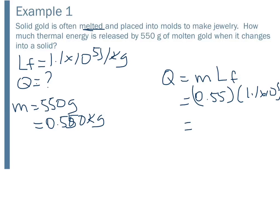So when you do that you get 60,500 joules. We'll divide that by 1,000 so we get 60.5 kilojoules. And we need to round that to 61 kilojoules, because the 550 probably just has two significant figures and the latent heat of fusion definitely has two.